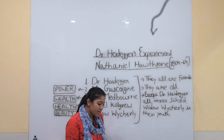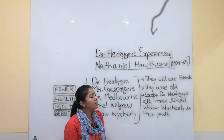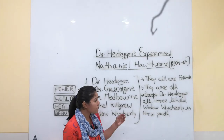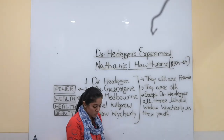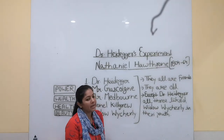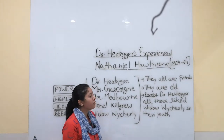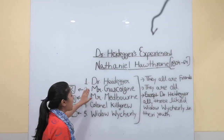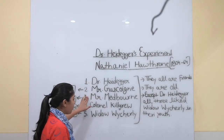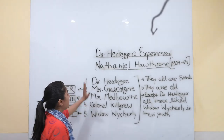Allegory means a literary work in which characters, objects, and events represent abstract qualities and ideas. The characters of the story are Dr. Heidegger, Mr. Gascoigne, Mr. Medbourne, Colonel Kilgrew, and the Widow Wycherly.